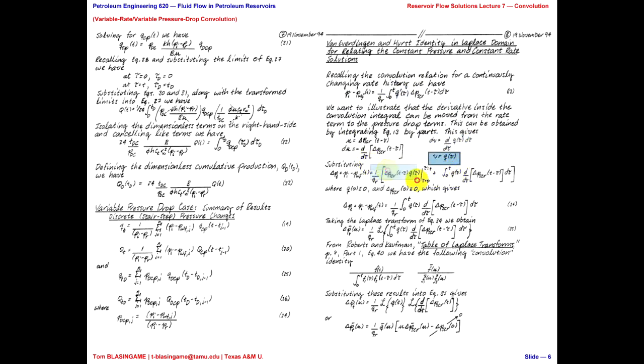The integral of VDU is equal to UV minus the integral UDV, right? So here's U. That's something that is easy to differentiate. Here's DV which is something that's easy to integrate. And there is V. So here we have UV. And here we have VDU. We have the rate is equal to zero at zero. The pressure drop at zero is equal to zero. So now we want to take the Laplace transform of equation 35.